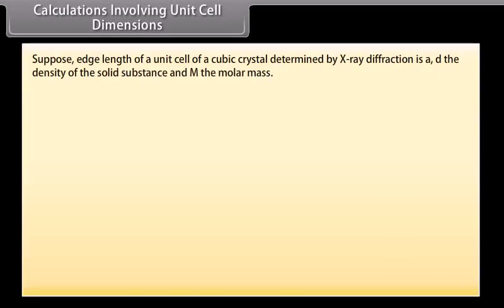Calculations involving unit cell dimensions. Suppose edge length of a unit cell of a cubic crystal determined by X-ray diffraction is a, d the density of the solid substance, and M the molar mass. In case of cubic crystal, volume of a unit cell is equal to a cubed.